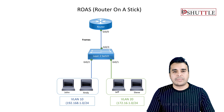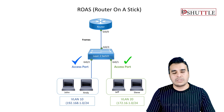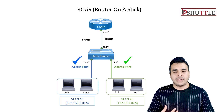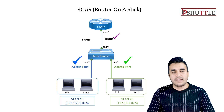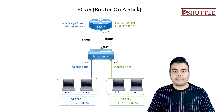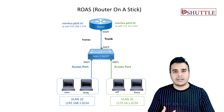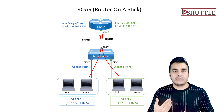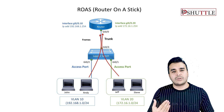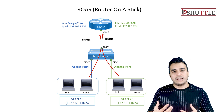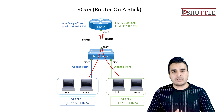In the router on a stick scenario, all PCs will be on access ports in different VLANs, but the router interface will be converted to a trunk interface and we will configure virtual interfaces on the router. We assign an IP address from each VLAN, then utilize the router as our default gateway to route packets from VLAN 10 to VLAN 20. Once it's trunk, all packets will be reaching the router.